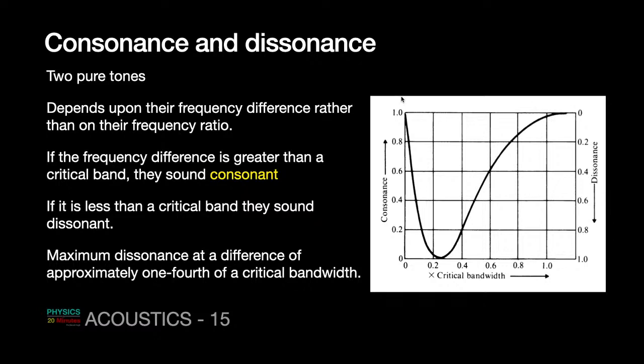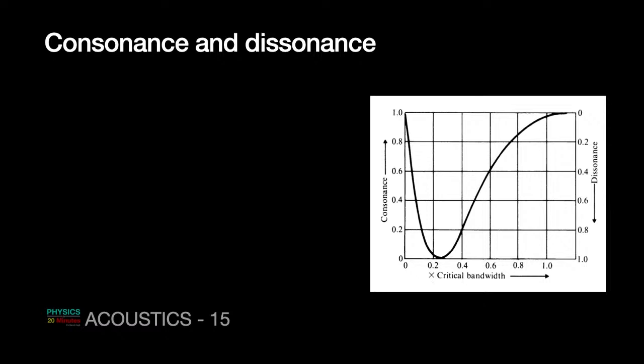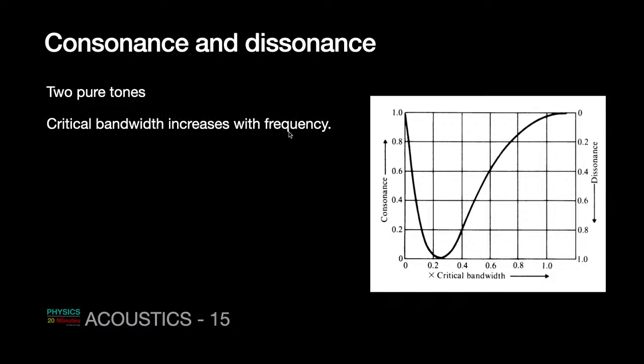This is an experimental result averaged over many trained listeners, with normalized scales between 0 and 1. Now, the critical bandwidth itself changes — it goes on increasing with frequency. If you recall, at lower frequencies the critical bandwidth is around 90 Hz, and it stays fairly constant for a while. Around a central frequency of 500 Hz, the critical bandwidth increases to about 110 Hz, and then increases further beyond that.